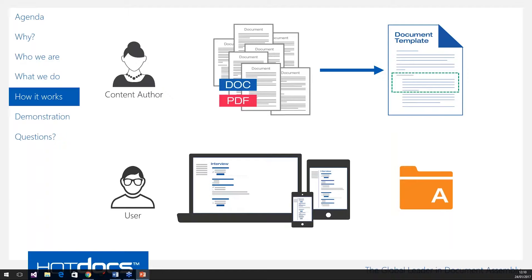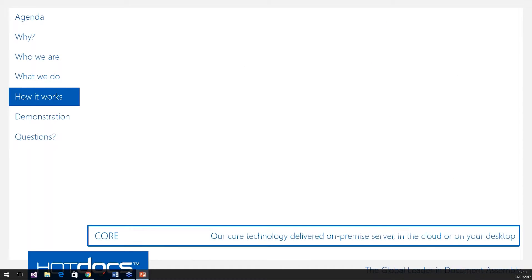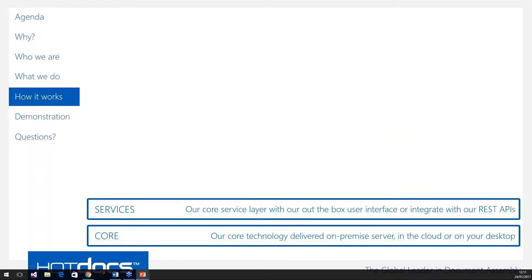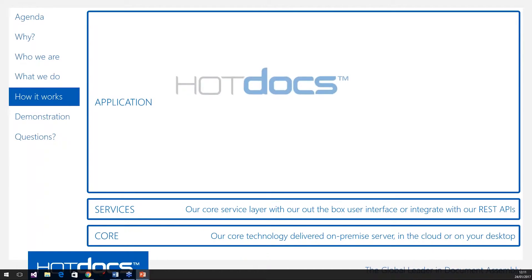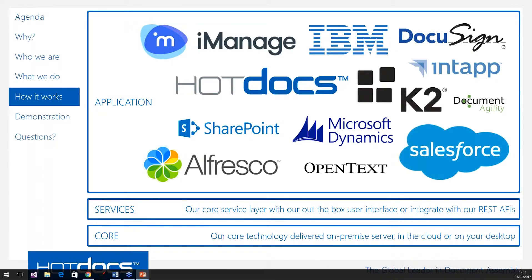So at a very high level, that is how the technology works — two phases: first create the templates, second consume those templates to produce documents. At its core we have the intelligent document assembly engine. On top of that, a little more technical, we have services that allow you to integrate with other line of business systems — to push and pull data and documents. And on top of that, we have our own applications providing an end-to-end document assembly experience, as well as integrations with other systems: e-signature tools, document management tools, business process management, and CRM systems.